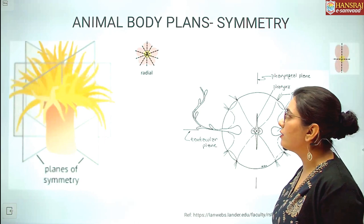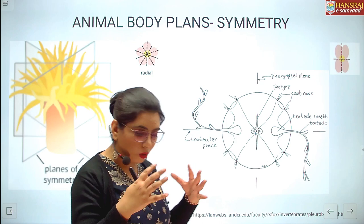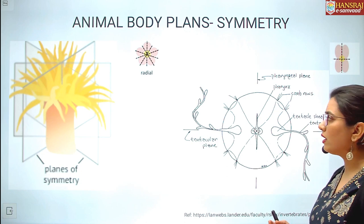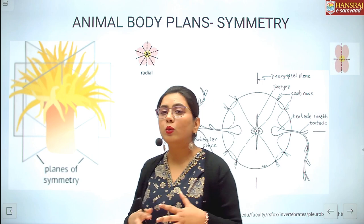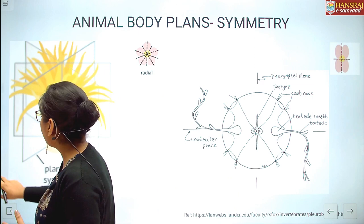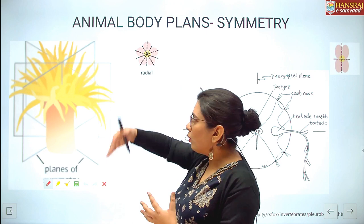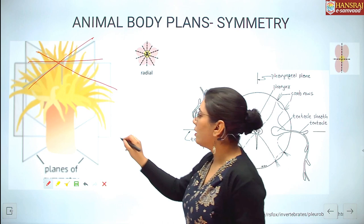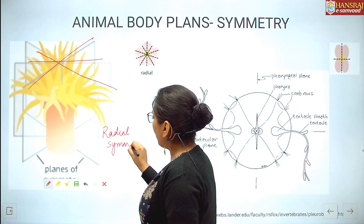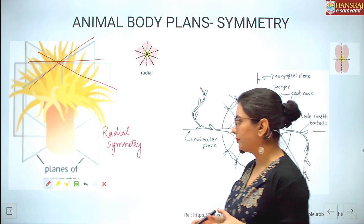We can also classify multicellular organisms through the perspective of symmetry and body plan. When multiple vertical sections can divide the body into equal halves — as seen in a polyp — that kind of symmetry is called radial symmetry. Organisms possessing radial symmetry are grouped into Radiata.